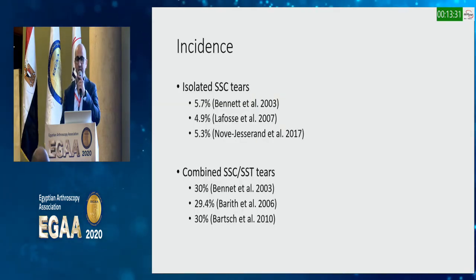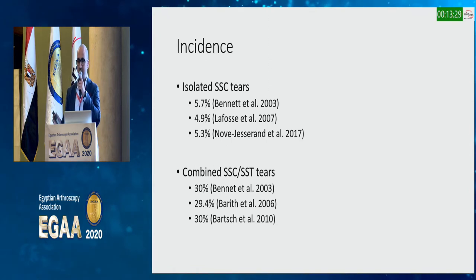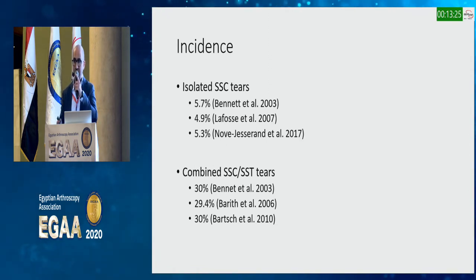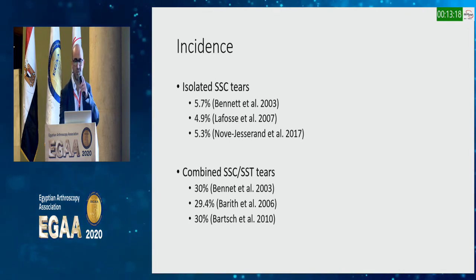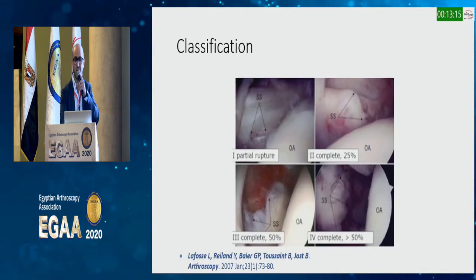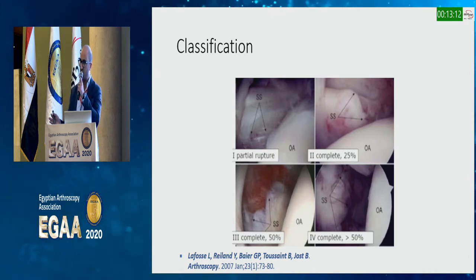The incidence of isolated subscap tears is not common — only about five percent. But combined tears with the supraspinatus are very common; you just need to look for them. About thirty percent of cases with a supraspinatus tear will have a subscap tear.